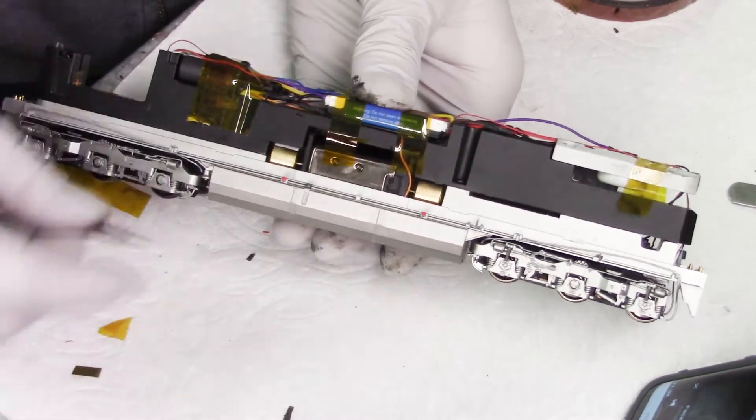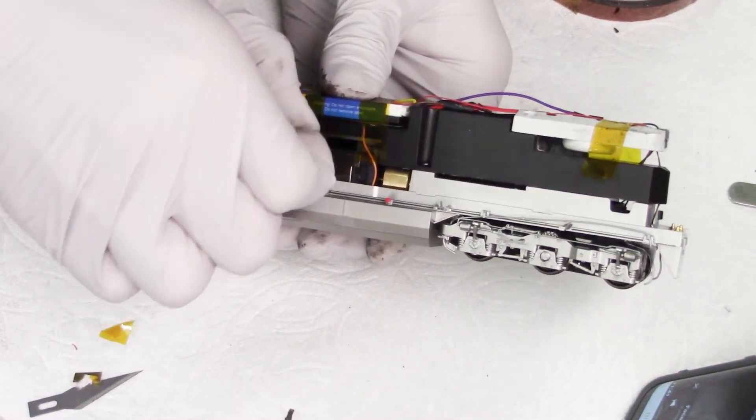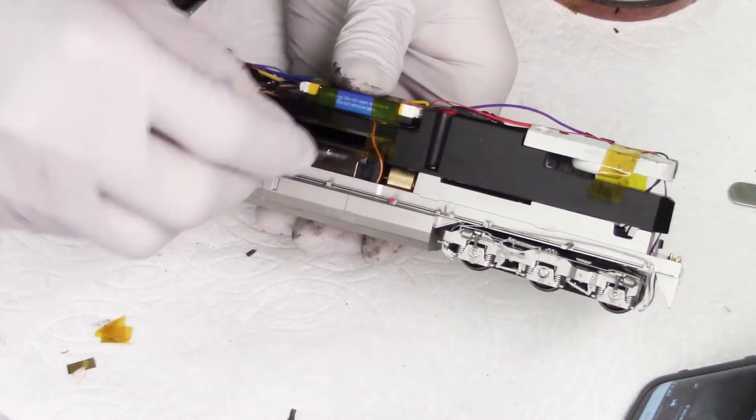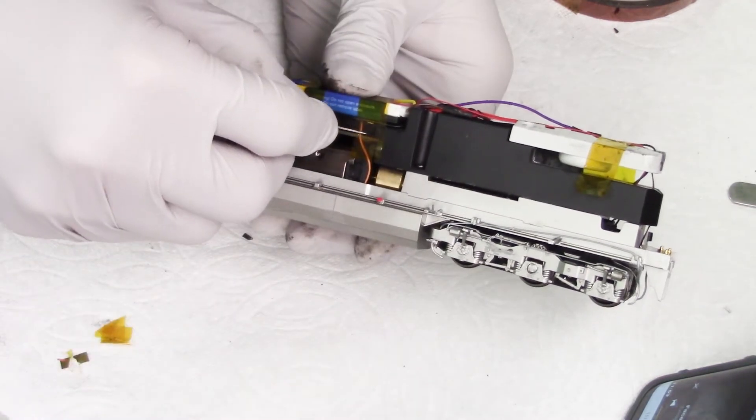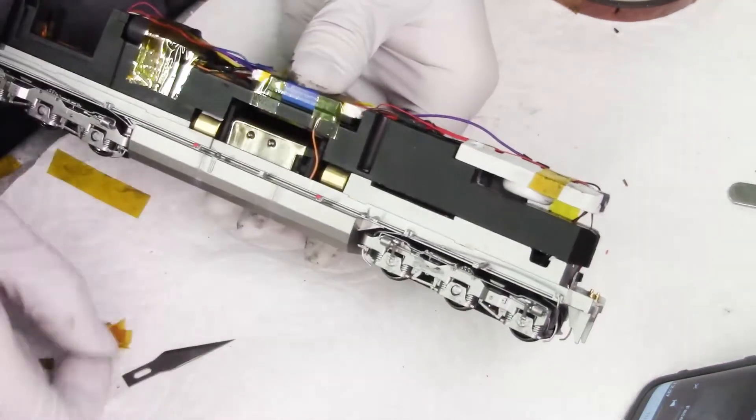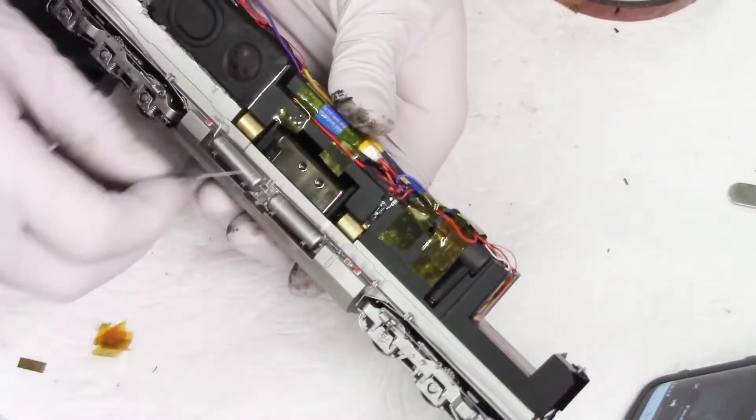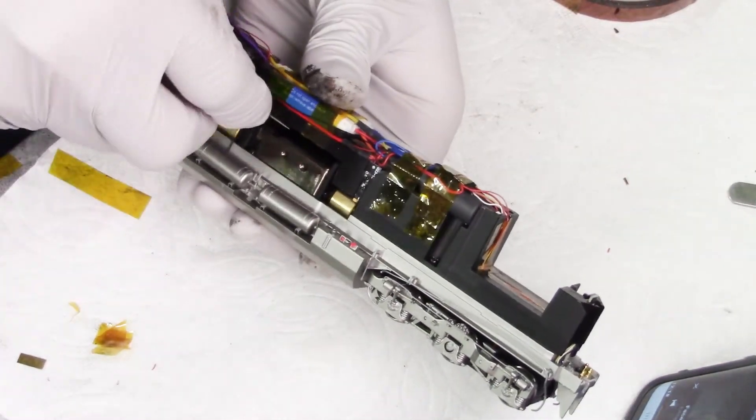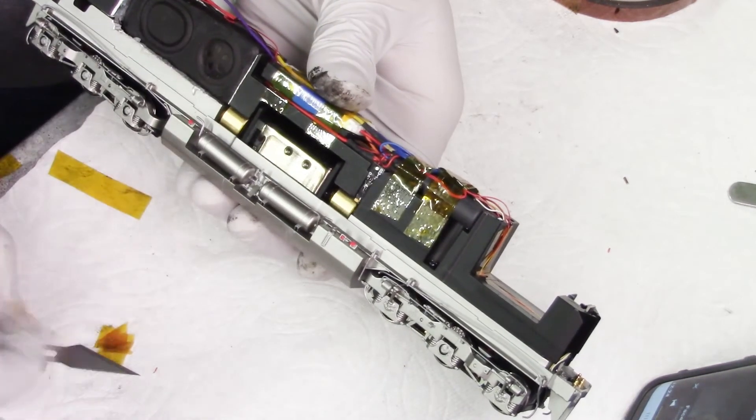After I tape everything down I like to go back through with a blade and clean up all the loose tape, any ends that are sticking out, again to make things look nice and clean but more importantly to keep it from interfering with the fit of the shell or getting into the drivetrain or anything that could cause any potential issues later on.